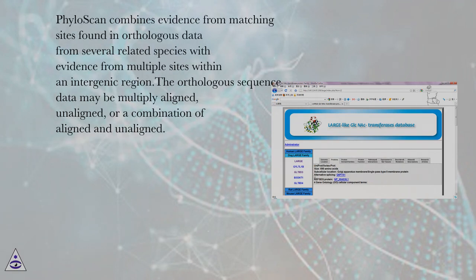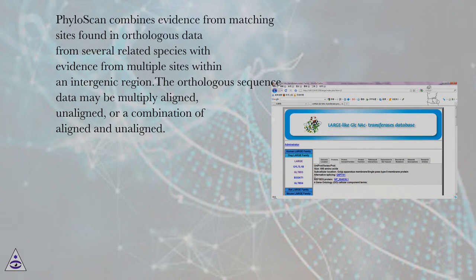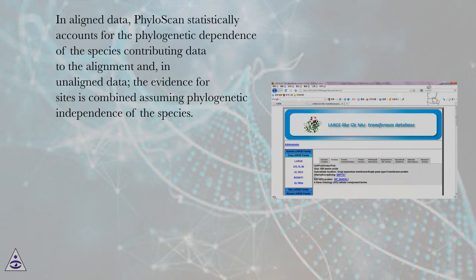Phyloscan combines evidence from matching sites found in orthologous data from several related species with evidence from multiple sites within an intergenic region. The orthologous sequence data may be multiply aligned, unaligned, or a combination of aligned and unaligned. In aligned data, Phyloscan statistically accounts for the phylogenetic dependence of the species contributing data to the alignment; in unaligned data, the evidence for sites is combined assuming phylogenetic independence of the species. The statistical significance of gene predictions is calculated directly without employing training sets (Carmack et al., 2007). The application of the algorithm to real sequence data from seven Intrabacteriales species identifies novel CRP and PurR transcription factor-binding sites, thus providing several new potential sites for these transcription factors.